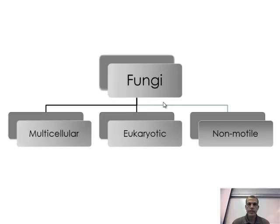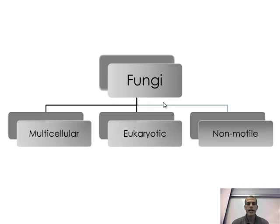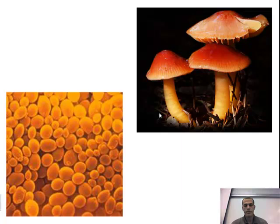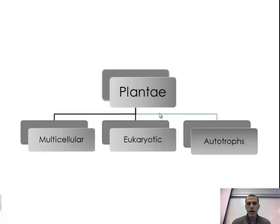The third kingdom is Fungi. These are multicellular — so many-celled — eukaryotic, and non-mobile; they're not moving, they're usually attached to something. These are organisms that many of you have seen before, and here are a couple of different examples of what fungi look like.